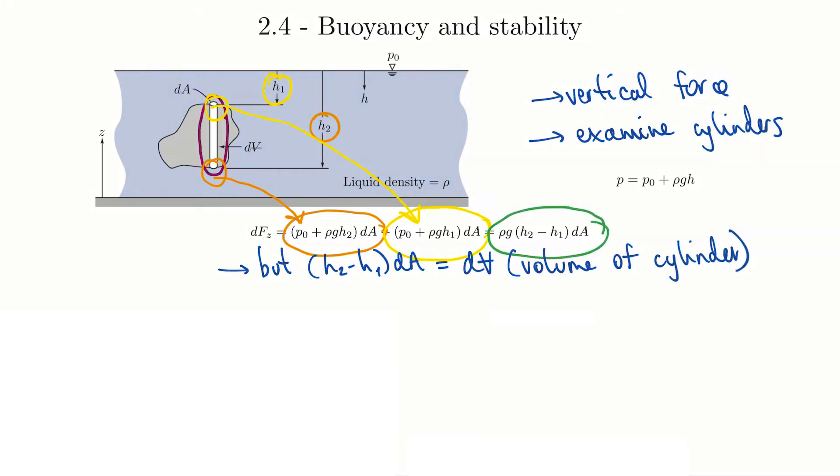So to calculate the total force in the Z direction then, we just integrate each of those DFZ, differential force elements, as follows. So we sub in what we have, and again, these liquids are treated as incompressible, so we don't expect a density change over this depth, or a change in the gravity constant. So when we integrate rho GdV, that just ends up being rho Gv.